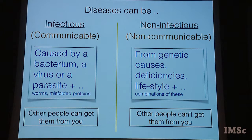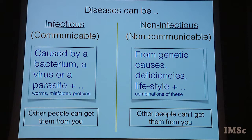There are two broad categories of diseases. First, infectious — they can move from person to person, also called communicable diseases. The other is non-infectious or non-communicable, which do not move from person to person. Infectious diseases are all caused by a bacterium, a virus, or some kind of parasite. Non-infectious diseases come from genetic causes, deficiencies, lifestyles, or combinations of these. We will be more concerned with infectious diseases, simply because in the context of public health on a larger scale, I can't get a non-infectious disease from you.